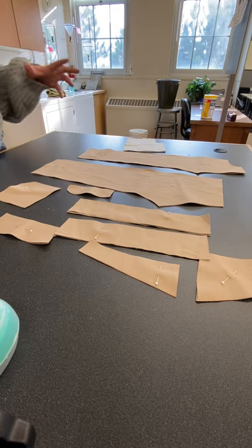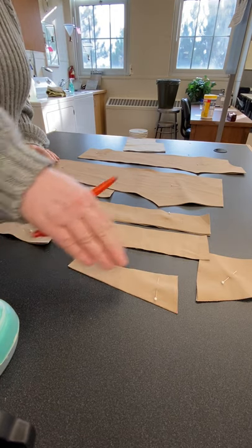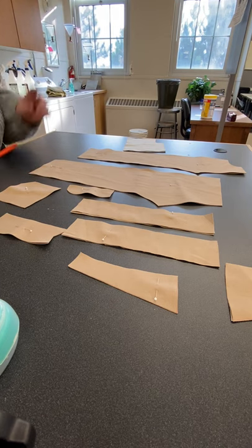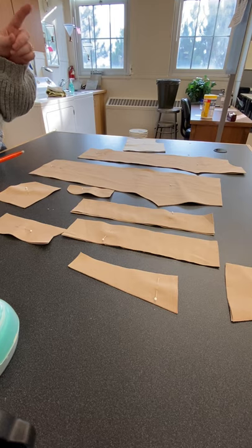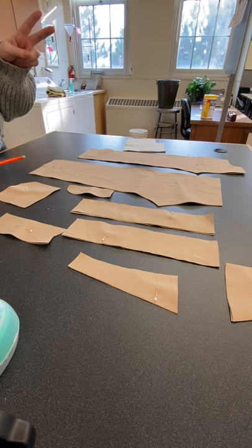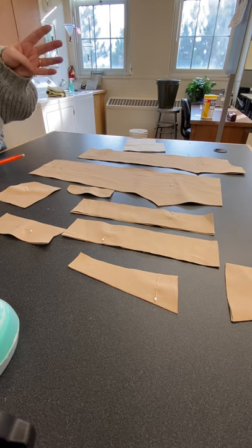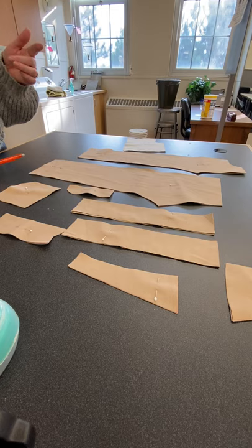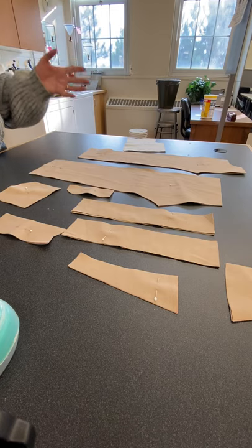So process, general order of operations. Once you have it cut, the very general process says yokes first. That's what you should do first. Yokes and darts. Number two, you would do pockets. Number three, you'd do a fly. Then you move into inseams, outseams, crotch seams, and then you do the waist at the end. That is a very generic, basic order of operations.